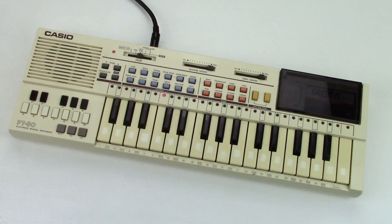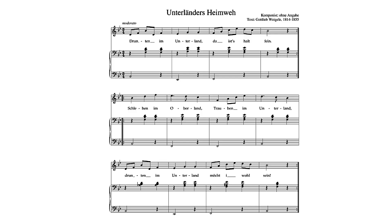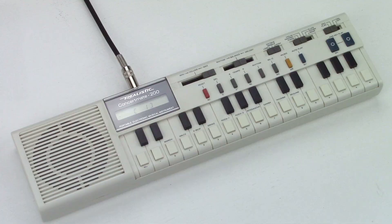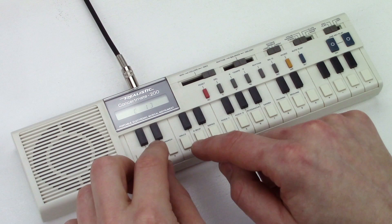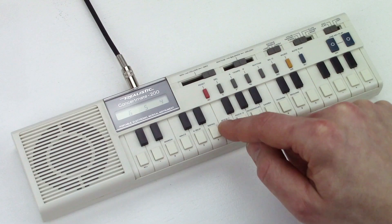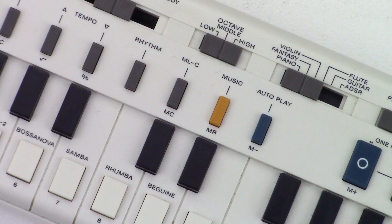There is a German folk song existing with this name, also known as 'Drunten im Unterland,' which means 'down in the lowlands.' It's about someone in the mountains who thinks it's much better in the lowlands, where people are poor but open-hearted. But I was surprised, because it has a completely different melody and time signature — nothing in common with the demo melody. Why did they name it Unterländers Heimweh? Was it a mistake? Or where does this melody come from?